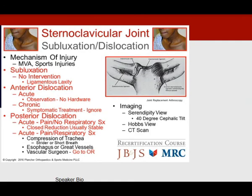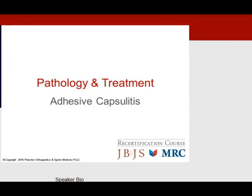The sternoclavicular joint can sublux — no intervention is needed in the ligamentously lax patient. For acute anterior dislocation, observe and avoid pins and hardware; chronically, ignore anterior dislocation. For acute posterior dislocation without respiratory symptoms, closed reduction usually succeeds and the joint stays stable. However, acute posterior dislocation with pain and respiratory symptoms — tracheal compression causing shortness of breath or stridor — requires operative intervention with a vascular surgery colleague.